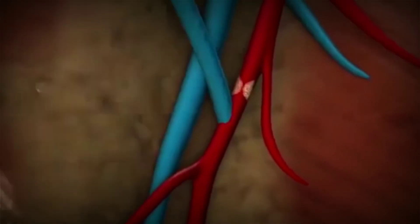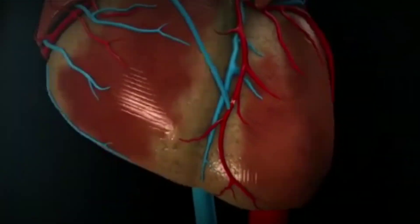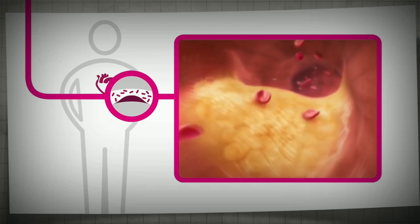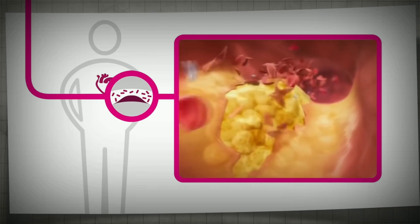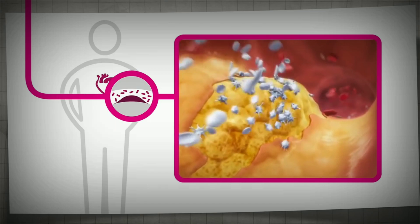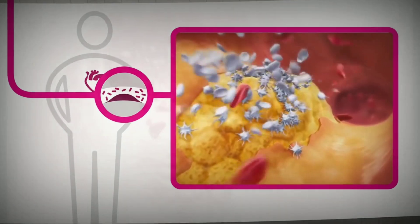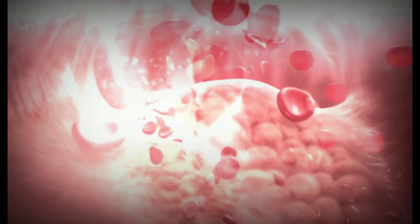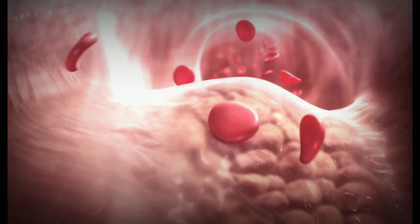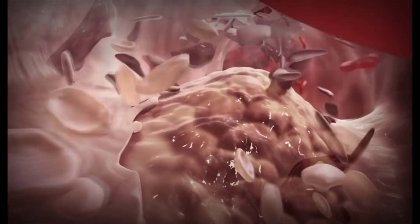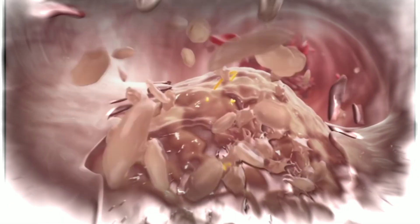It develops when the major blood vessels that supply the heart become damaged or diseased. Cholesterol-containing deposits of plaque in coronary arteries and inflammation are usually to blame for CAD. These coronary arteries supply blood, oxygen, and nutrients to the heart, and a buildup of plaque can narrow the lumen, decreasing blood flow to the heart.